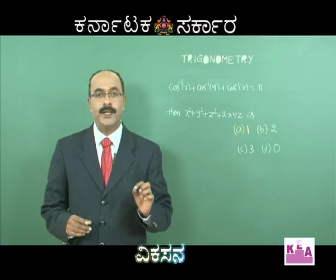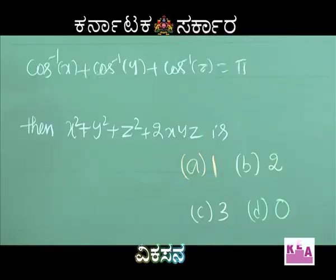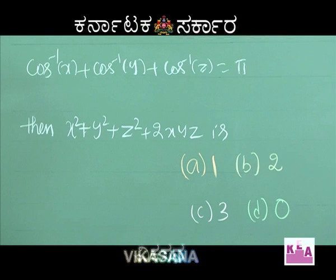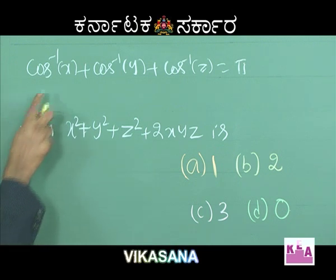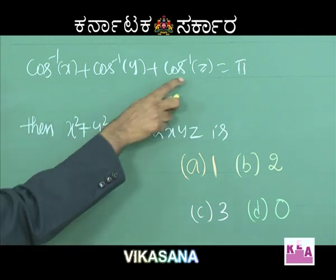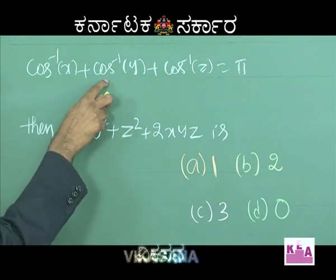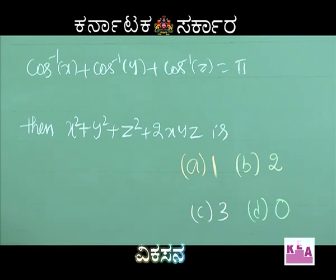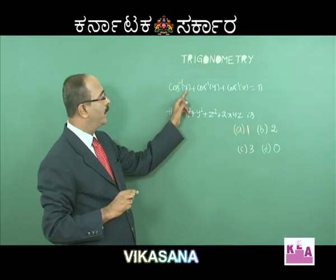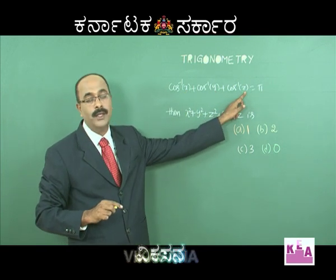Here, cos inverse of x plus cos inverse of y plus cos inverse of z is equal to pi. Then x squared plus y squared plus z squared plus 2xyz equals 1. The healthy approach is: x equals y equals z equals 1 by 2, because cos inverse of 1/2 equals pi by 3, and pi by 3 plus pi by 3 plus pi by 3 equals pi.